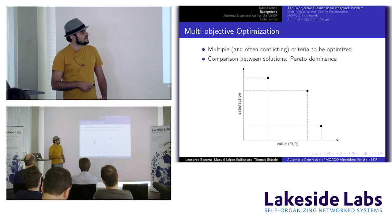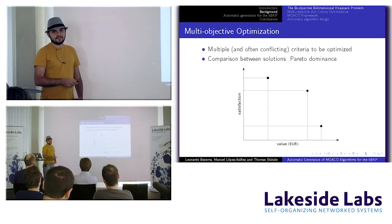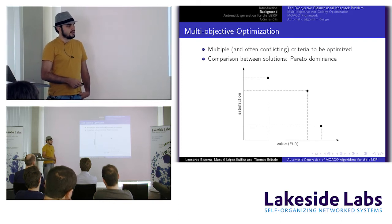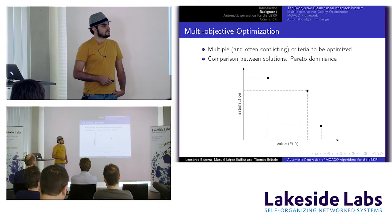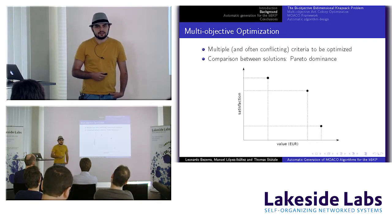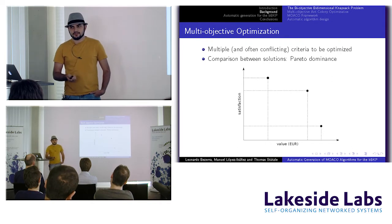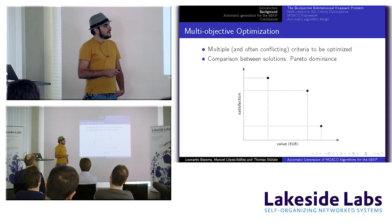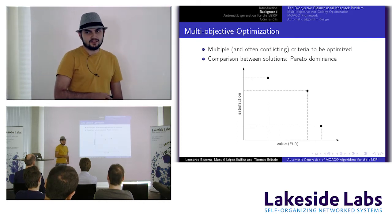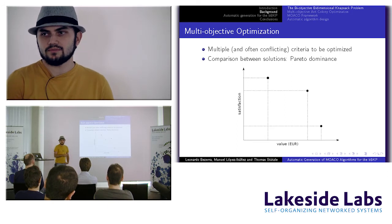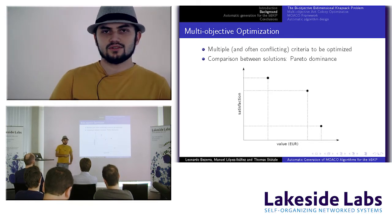In multi-objective optimization you have multiple, usually conflicting, criteria to optimize. When comparing solutions: one solution may be better in satisfaction but worse in value, while another is the reverse — these are non-dominated. A solution that is worse in both objectives simultaneously is dominated and doesn't need to be considered. A multi-objective optimizer tries to find the full set of non-dominated solutions among all feasible solutions.